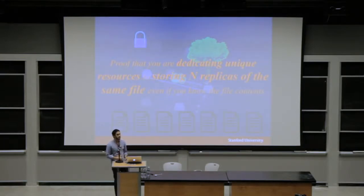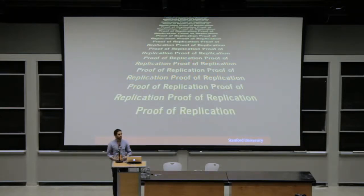As a special case, this would give you a way to prove that you're dedicating unique resources to storing n different replicas of the same file, even if you know the file contents. Here, if you know one copy of the file, then you can easily generate n copies of the file. But now, with a proof of this kind, I'm demonstrating that I'm actually using n times the amount of storage to store n different unique replicas of the same file. And that's where we get the name proof of replication.